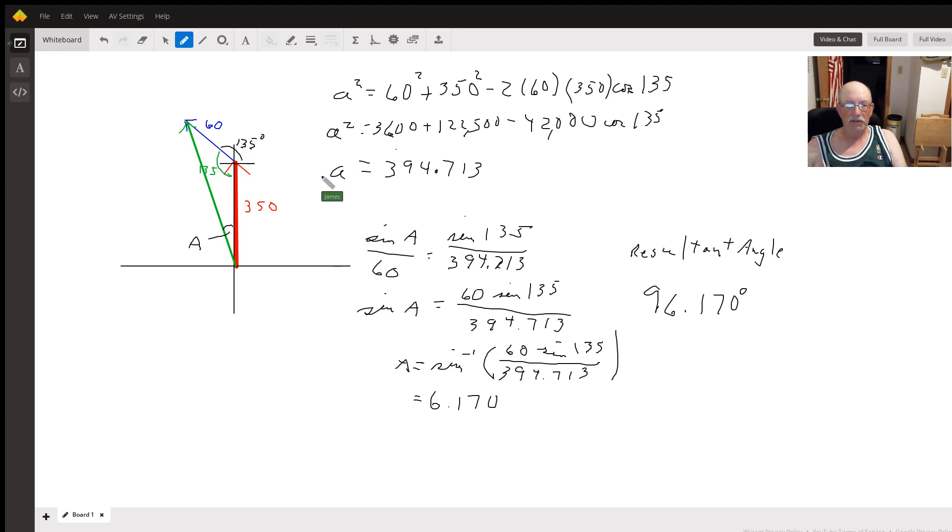Work out all those numbers, A is going to equal 394.713 kilometers per hour. That's the speed for the resultant.